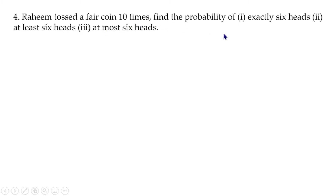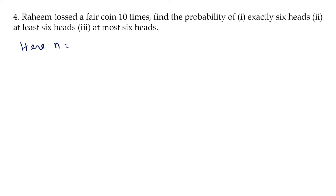Next question: Rahim tossed a fair coin 10 times. Find the probability of exactly 6 hits, at least 6 hits, and at most 6 hits. Here n is equal to 10.